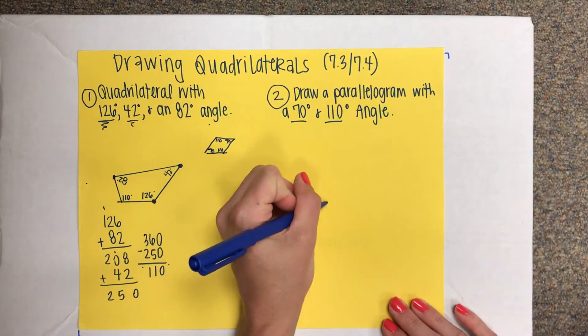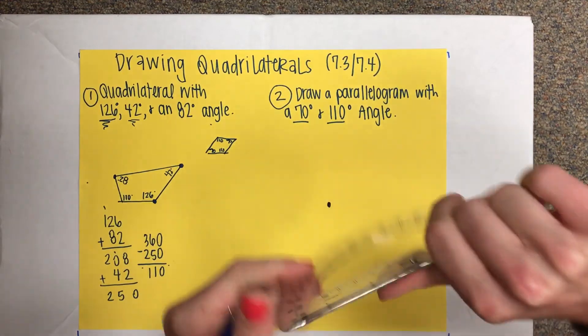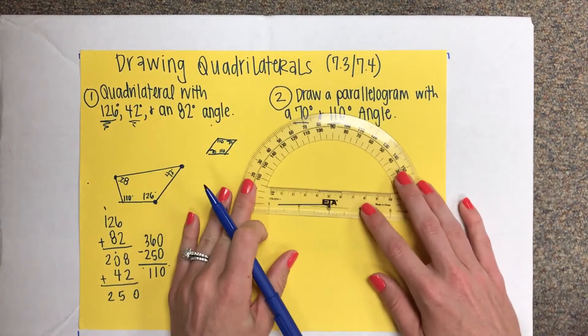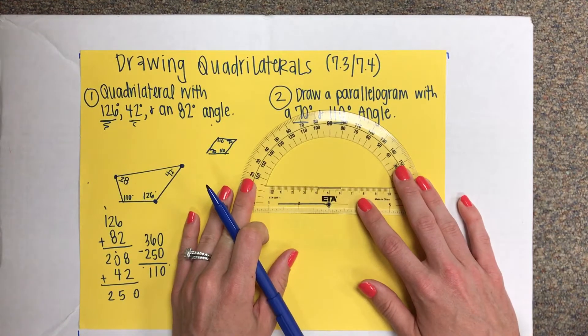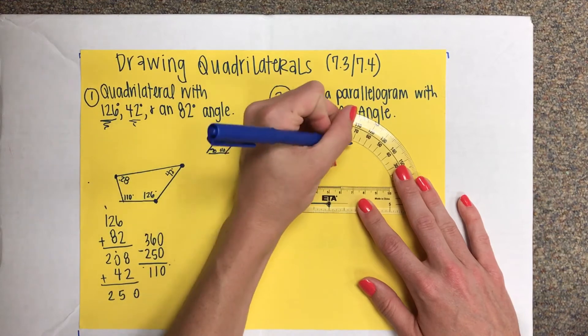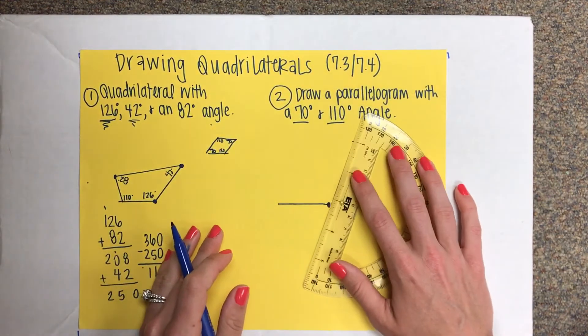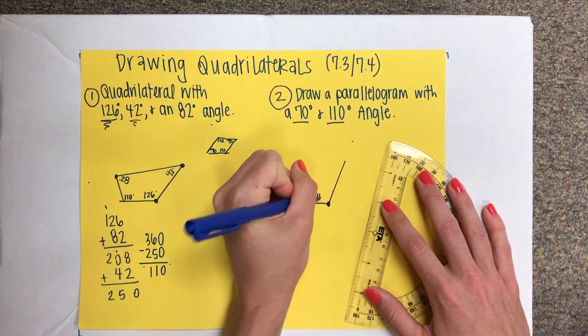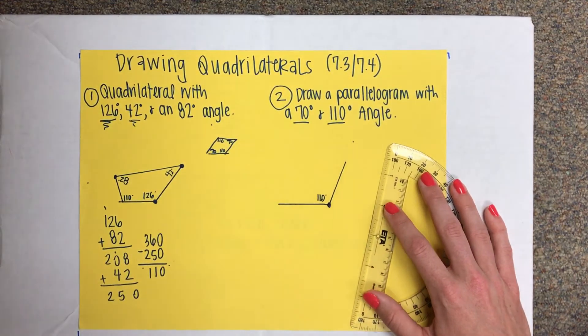Again, you start off by drawing your dot and your line. I'm going to go ahead and draw 110, so all the way over here. And label the degree measurement.